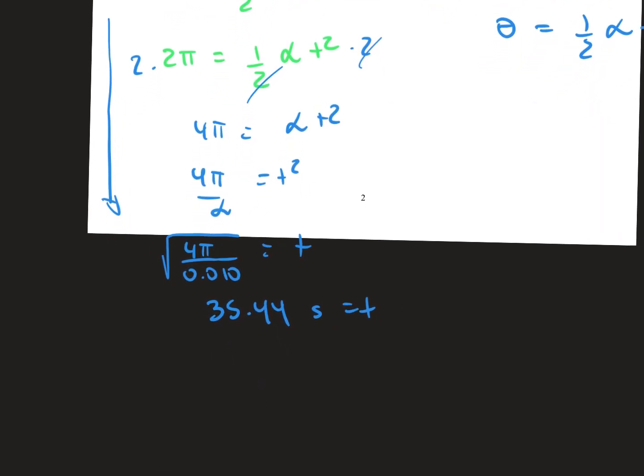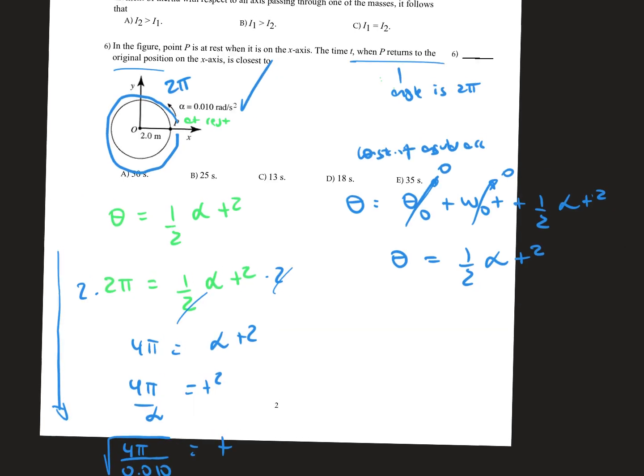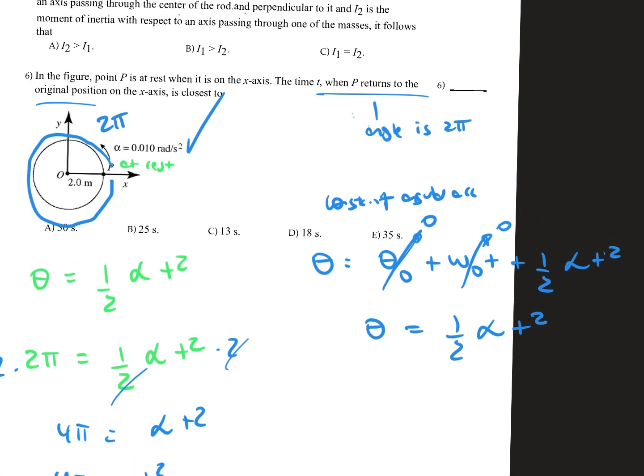And that should give us an approximate of 35.44 seconds for the time. So now our answer would be 35 seconds, letter E. So 35 seconds is the time that P is going to take when it returns to the original position.